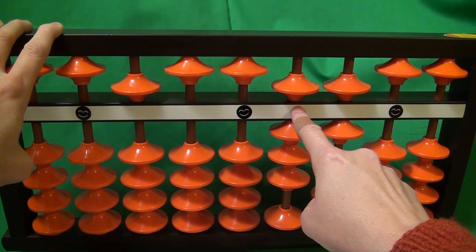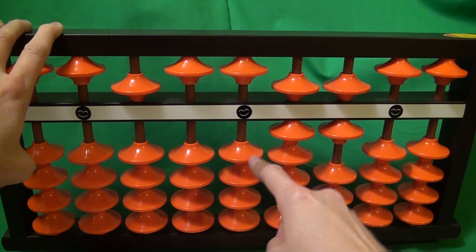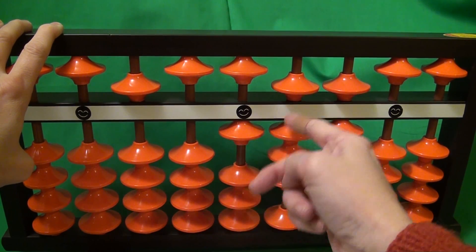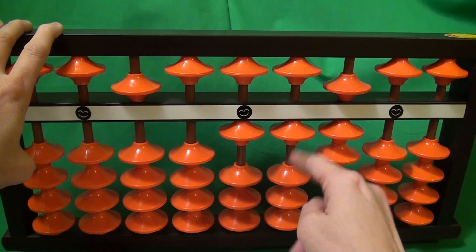Now I got 4 times 8. 4 times 8 is 32. So I add a 3 here. So I add 10, take away 7, and then add a 2 here. I added 32.